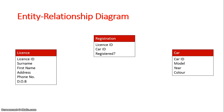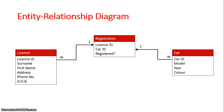We've got our entities and our attributes. The thing about a relational database is that the different tables are related. The license ID would be connected to the license ID in registration. This would be a many-to-one relationship because many license holders could be registered to the one car. For the car and the registration, it would be many-to-one from the car to the registration — many cars can be registered, but only one at a time.